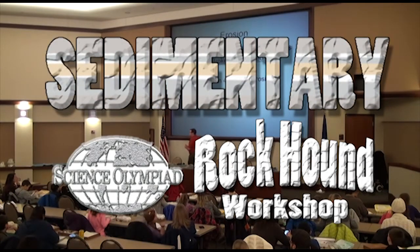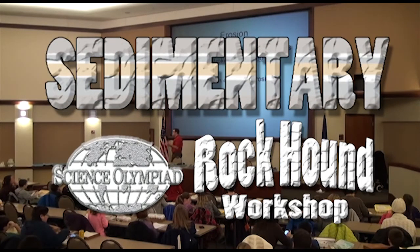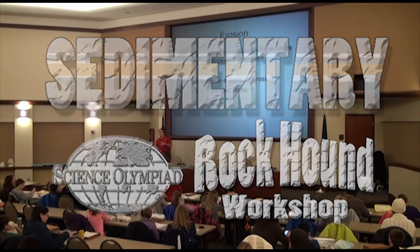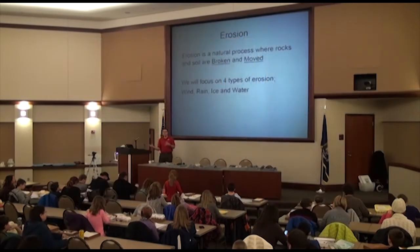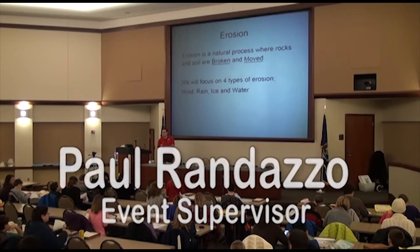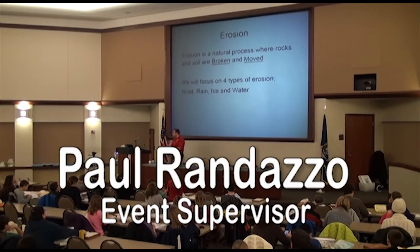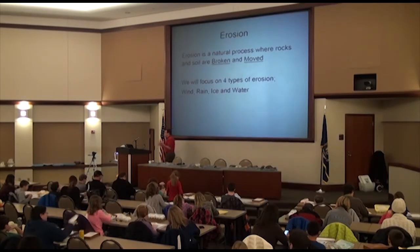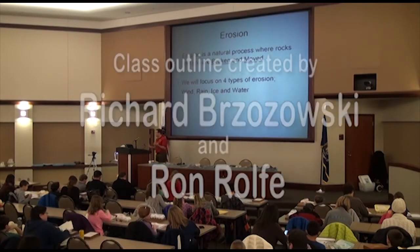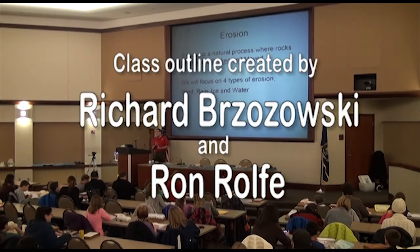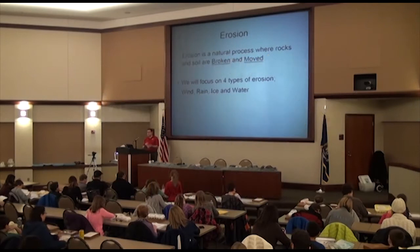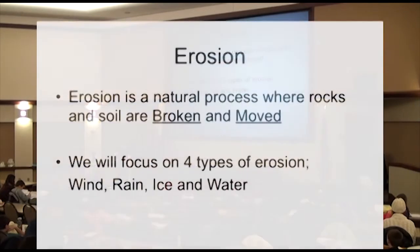Erosion is pretty simple. It's basically where rocks or soil are broken and moved — those two things, broken and moved. Erosion is kind of the creation of sedimentary rocks. We're going to talk about wind erosion and then different types of water erosion: rain erosion, ice, water, all different types of water.